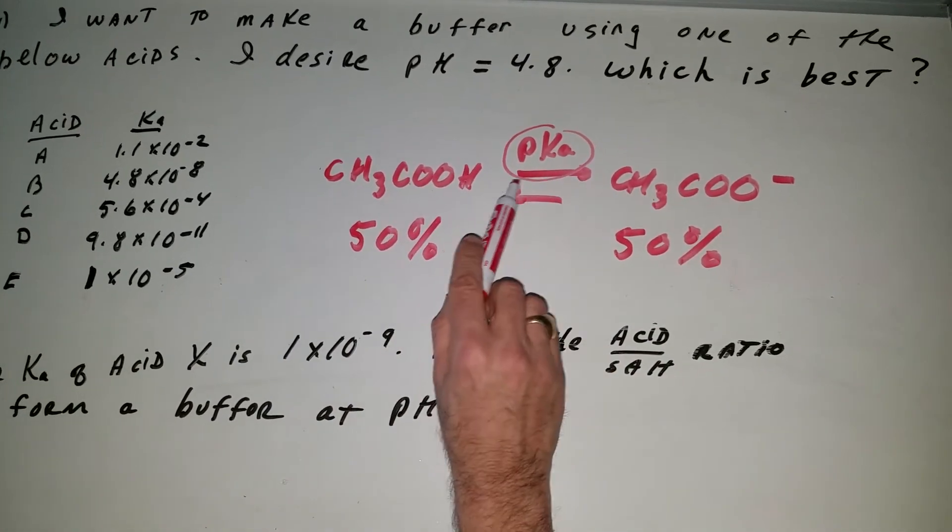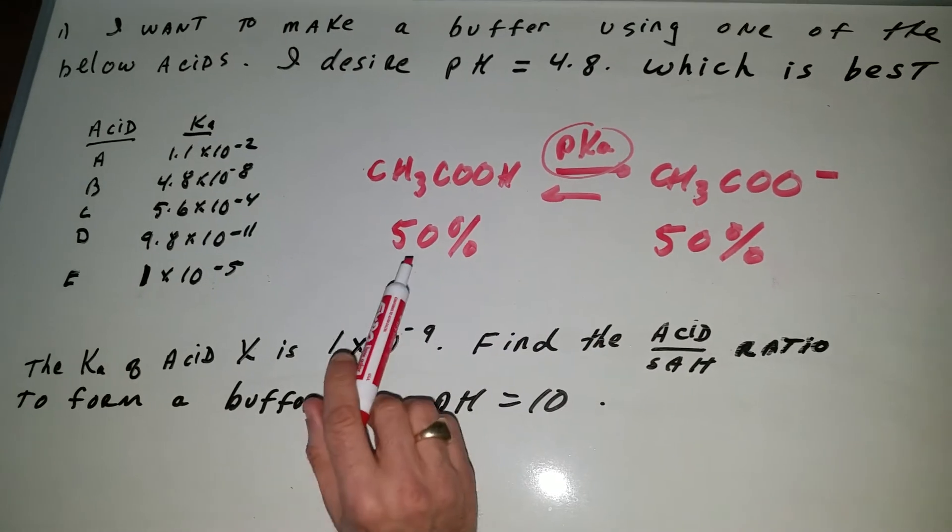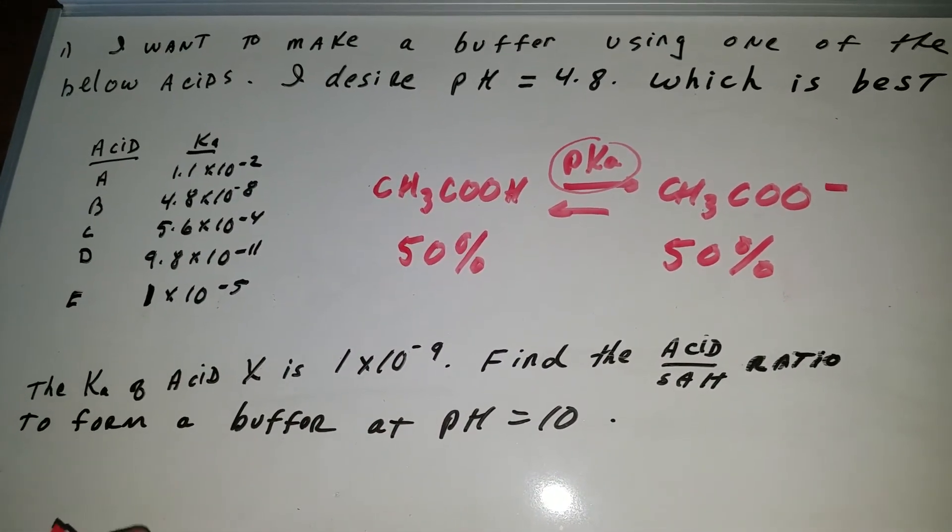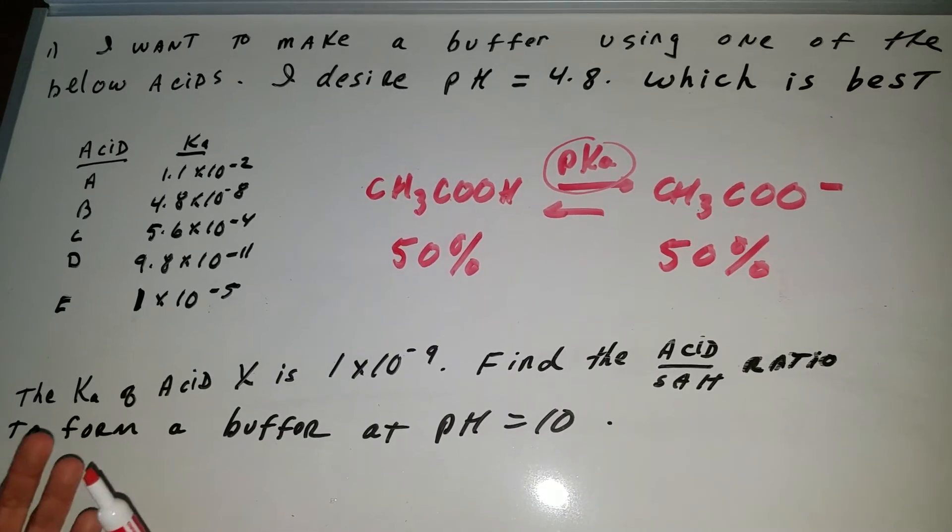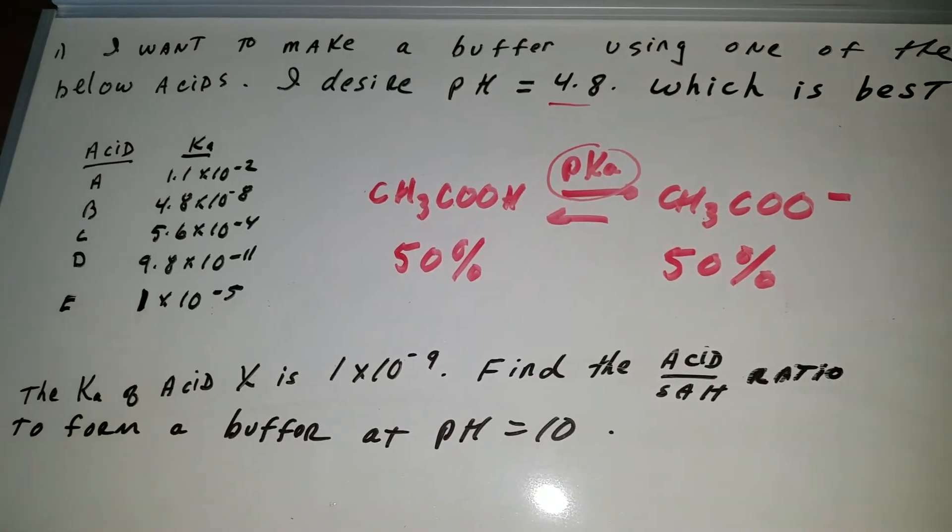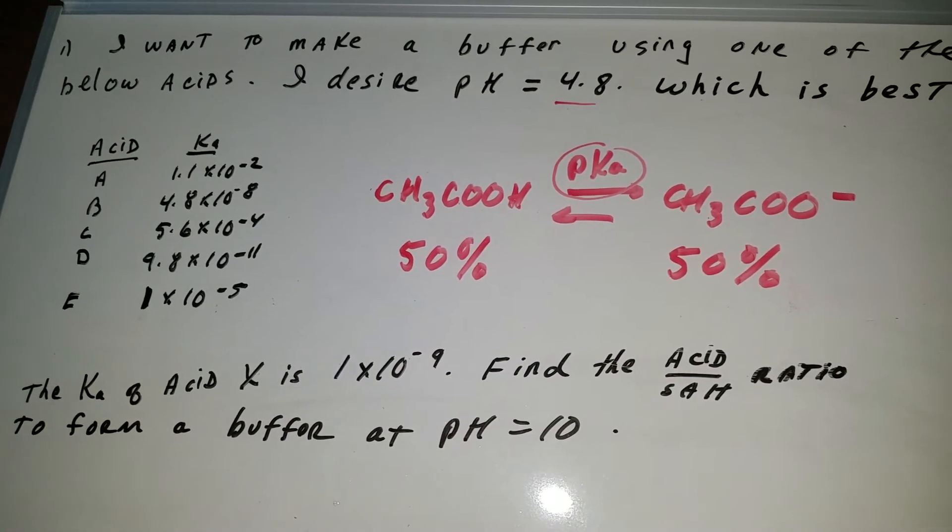So at a pKa value it's the best buffer. So what we want to do is to see which one of these acids has a pKa of 4.8 because that means at 4.8 and that's the desired pH we're going to have a 50-50 amount.